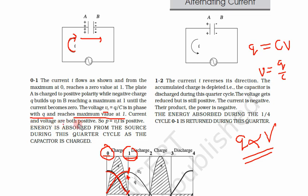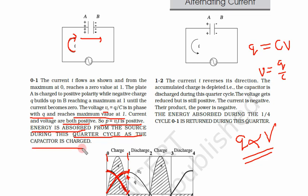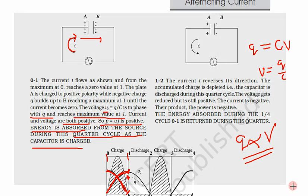In the first quarter from 0 to 1, current and voltage are both positive. Voltage is increasing and current is decreasing, but both remain positive. So power consumed is positive — energy is absorbed from the source during this quarter of the cycle. The capacitor becomes fully charged. Even though voltage started from zero and current decreased to zero, both were positive throughout, hence power is consumed.